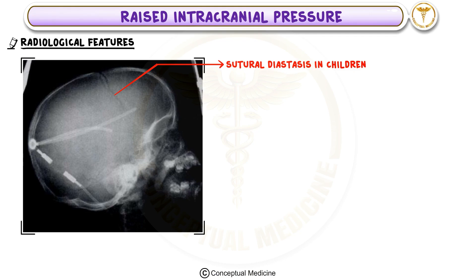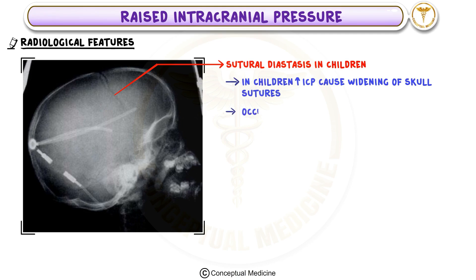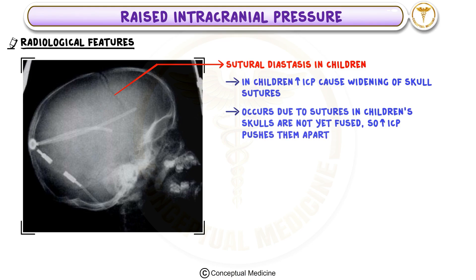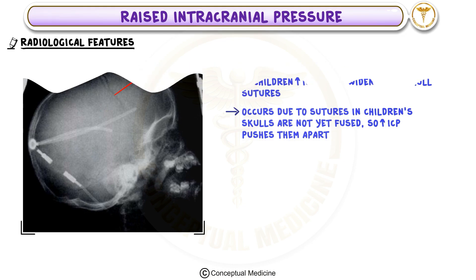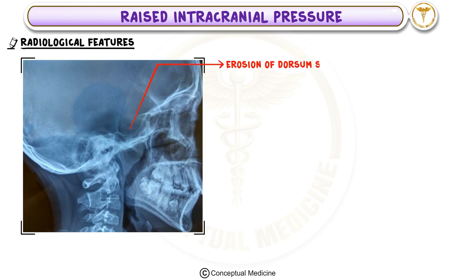In children, raised ICP can cause widening of skull sutures, a condition known as sutural diastasis. This happens because the sutures in children's skulls are not yet fused, so increased pressure pushes them apart. This is an important radiological clue in pediatric cases. A third feature is erosion of the dorsum sella, seen in adults.